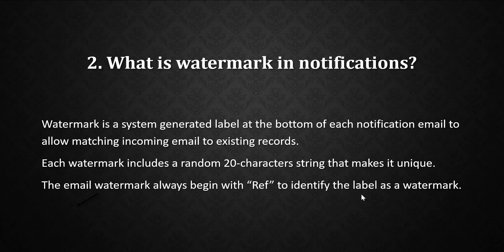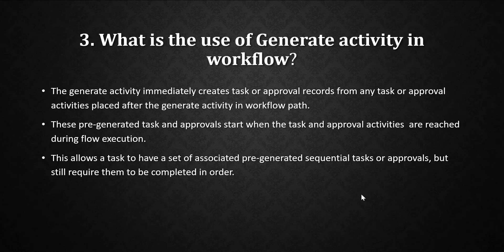What is the use of the generate activity in workflow? The generate activity immediately creates task or approval records from any task or approval activities placed after it in the workflow path. These pre-generated tasks and approvals start when the task and approval activities are reached during flow execution, allowing a task to have associated pre-generated sequential tasks or approvals that still must be completed in order.